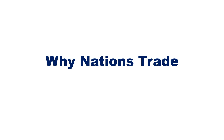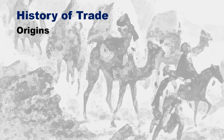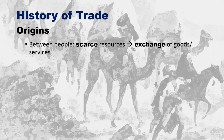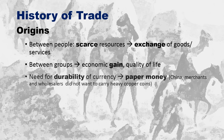Let's think about why nations trade in the first place. Some of the origins include scarce resources — people needed to exchange goods and services. You have tomatoes, I have potatoes, let's exchange. It was for economic gain and to increase quality of life. Over time, we needed a durable currency, which led to the invention of paper money, first used in China because merchants didn't want to carry heavy copper coins.